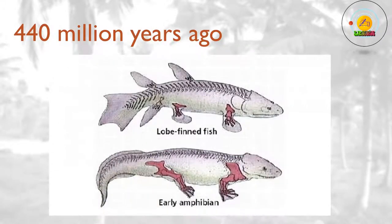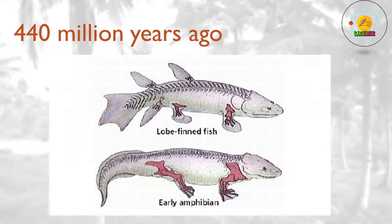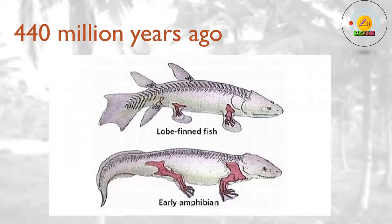440 million years ago? The bony fish split into their two major groups: the lobe-fin fish — with bones in their fleshy fins — and the ray-fin fish. The lobe-fin fish eventually give rise to amphibians, reptiles, birds and mammals. The ray-fin fish thrive, and give rise to most fish species living today. The common ancestor of lobe-finned and ray-fin fish probably has simple sacs that function as primitive lungs, allowing it to gulp air when oxygen levels in the water fall too low. In ray-fin fish, these sacs evolve into the swim bladder, which is used for controlling buoyancy.